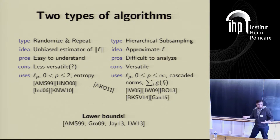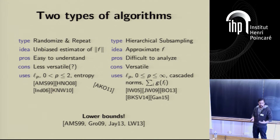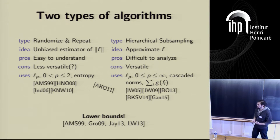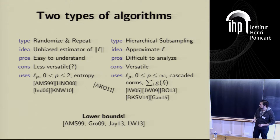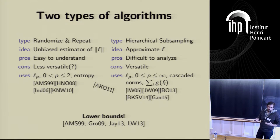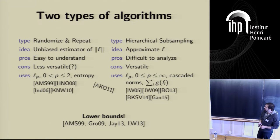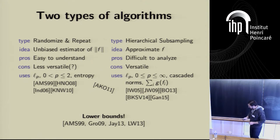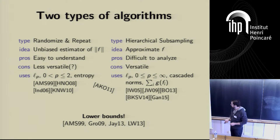In general, for these problems in the streaming model, we have strong lower bounds. I'm interested in the space complexity — how much storage is needed to approximate some function like the p-norm of a vector. We have matching upper and lower bounds, at least within some polylogarithmic factors, for almost all these problems. I'll talk about upper and lower bounds in the rest of the talk.